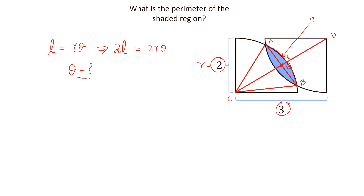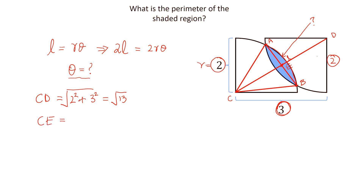CE is equal to half of CD. We can calculate CD because this length is 2 and this length is 3. So CD equals the square root of 2² + 3², which equals the square root of 13. Therefore CE equals the square root of 13 divided by 2.